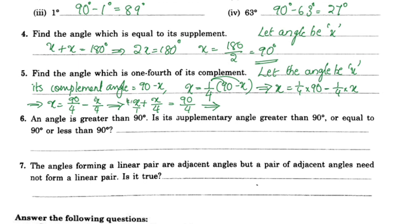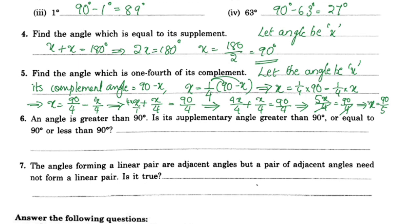Taking the LCM with denominator 4: 4x by 4 plus x by 4 equals 90 by 4. So 5x by 4 equals 90 by 4. Cancelling the 4s: 5x equals 90, so x equals 18 degrees.